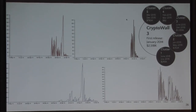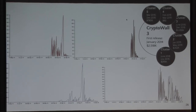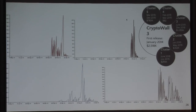CryptoWall version 3 made over $2 million and we found several clusters. Starting in early 2015, it improved by switching from RSA to AES encryption, enabling faster encryption for larger file sets. They also moved to the I2P network and could encrypt more file extensions. Despite its success, they abandoned it for CryptoWall 4. We found only a few clusters for version 4, and it made very little money compared to other versions. No clear reason for the abandonment of version 3 has been established.